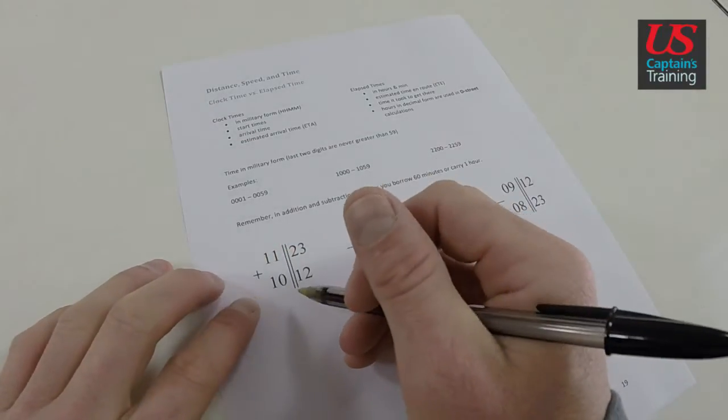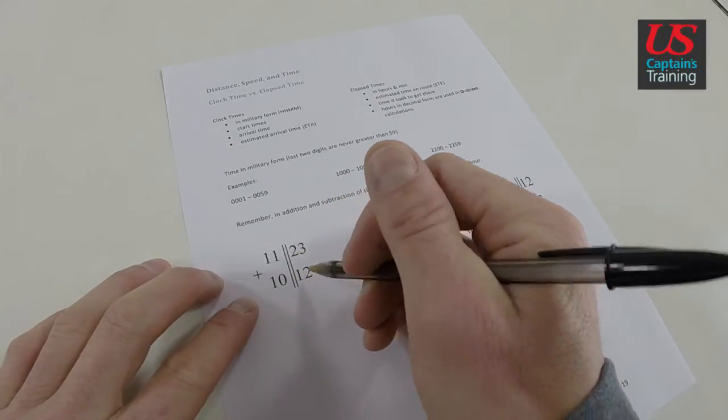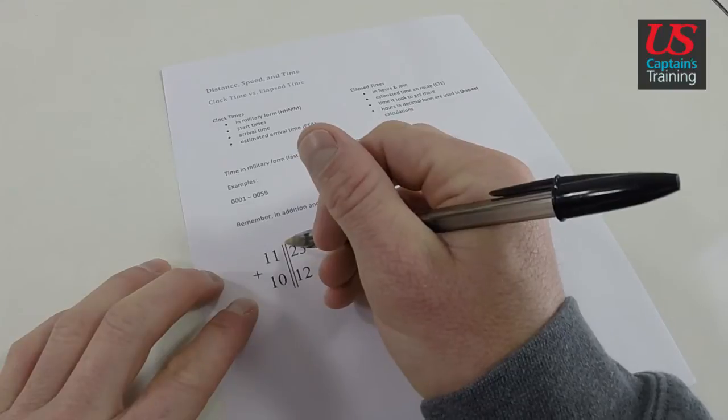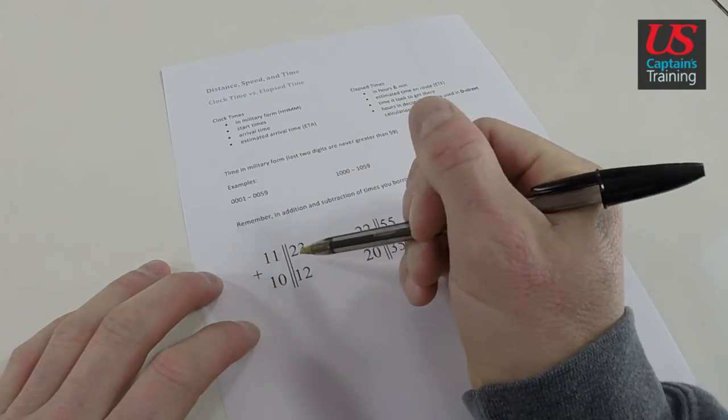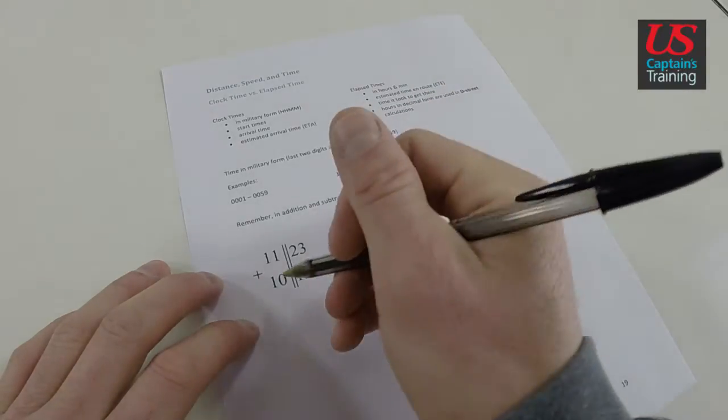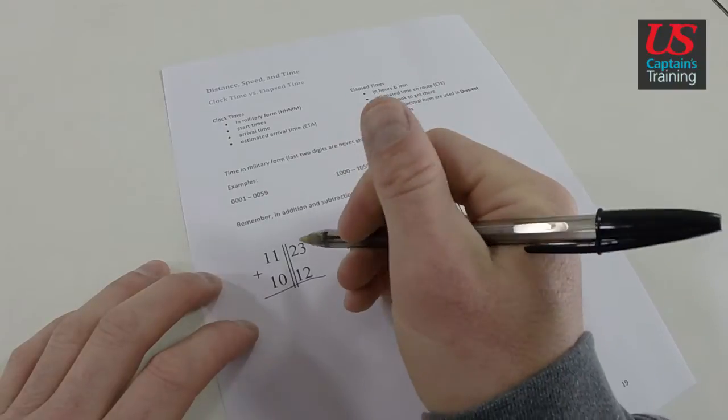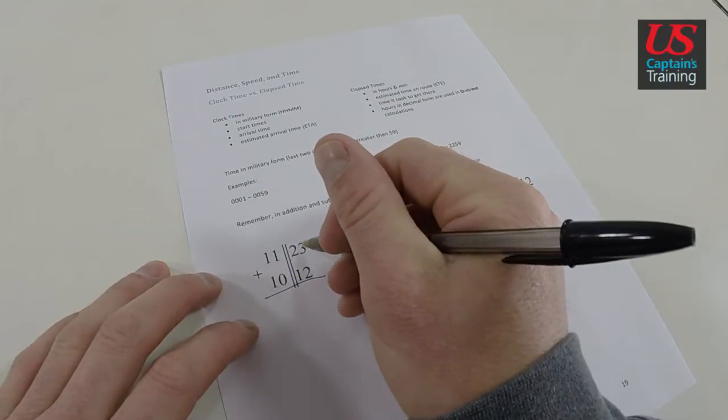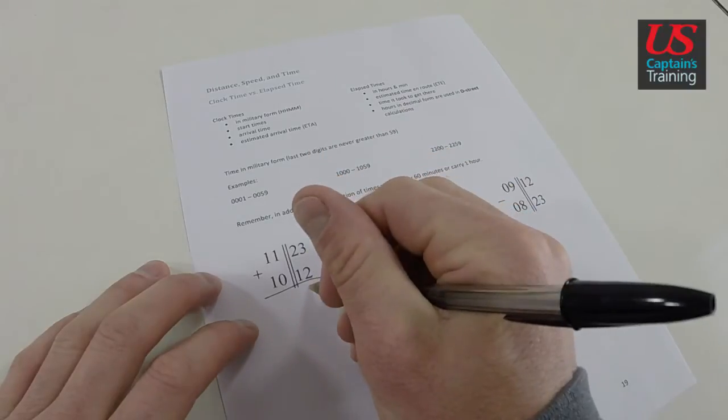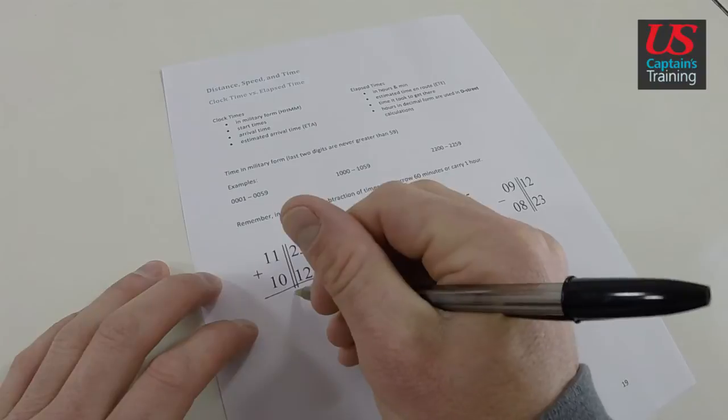So let's look at the first one. This is 1123 plus 1012. And these two vertical bars are just showing this is divided. This side is hours, this side is minutes for all of these. So let's look at the first one. It's an addition problem. 1123 and 1012. 3 plus 2 is 5. 2 plus 1 is 3. That's 35 minutes.